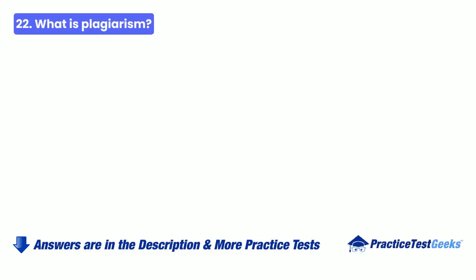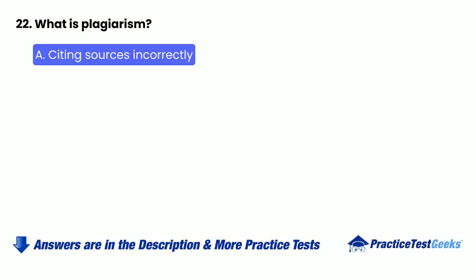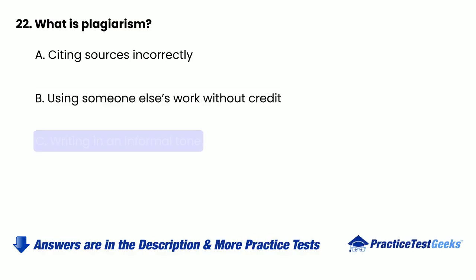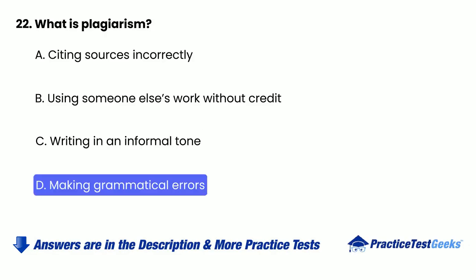22. What is plagiarism? A. Citing sources incorrectly. B. Using someone else's work without credit. C. Writing in an informal tone. D. Making grammatical errors.